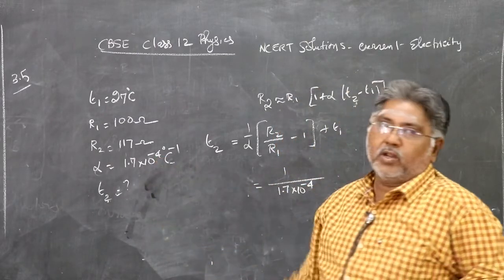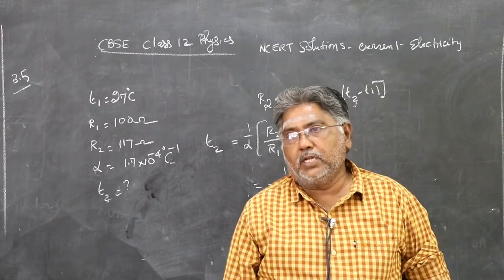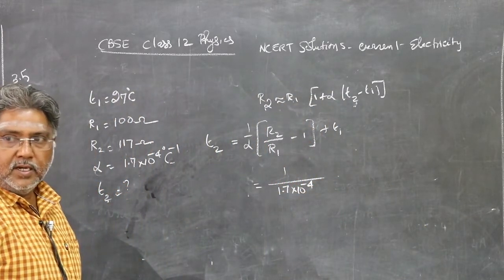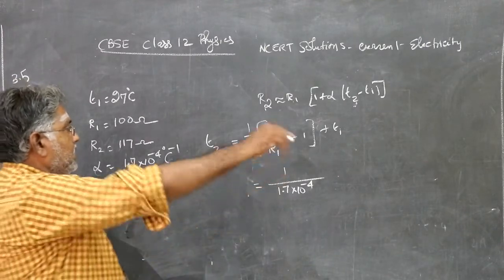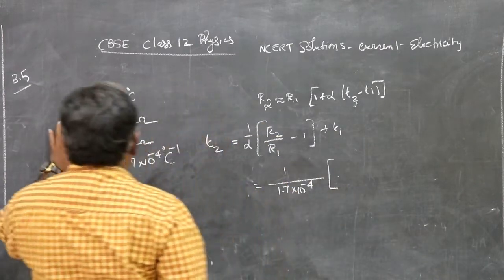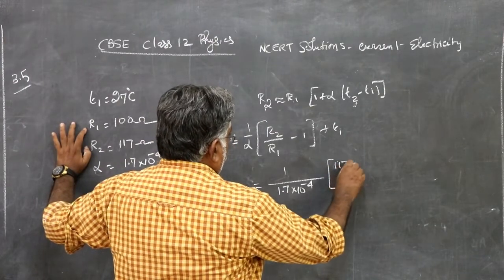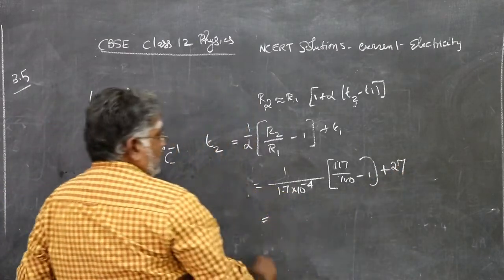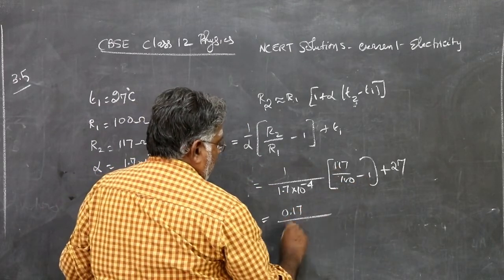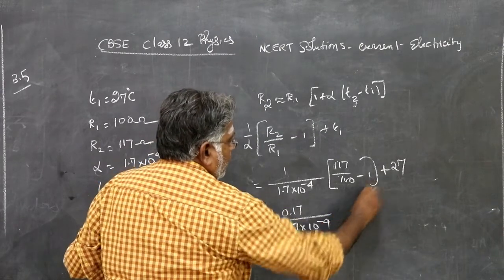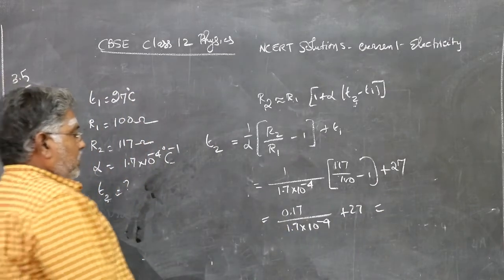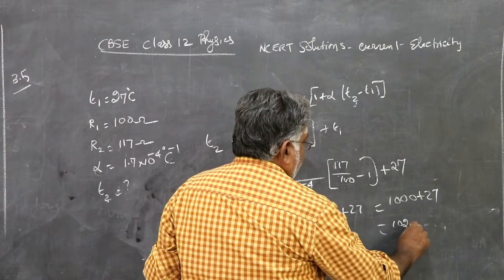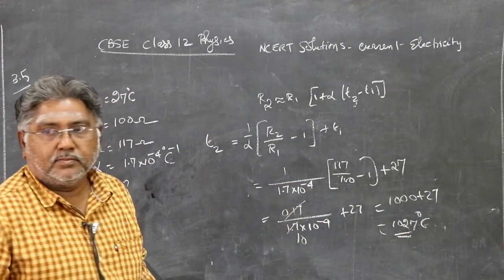1/α = 1 / (1.7 × 10⁻⁴). R2/R1 = 117/100 = 1.17. So T2 = (1.17 − 1) / (1.7 × 10⁻⁴) + 27 = 0.17 / (1.7 × 10⁻⁴) + 27 = 1000 + 27 = 1027 degree Celsius. That is the final temperature of the heating element.